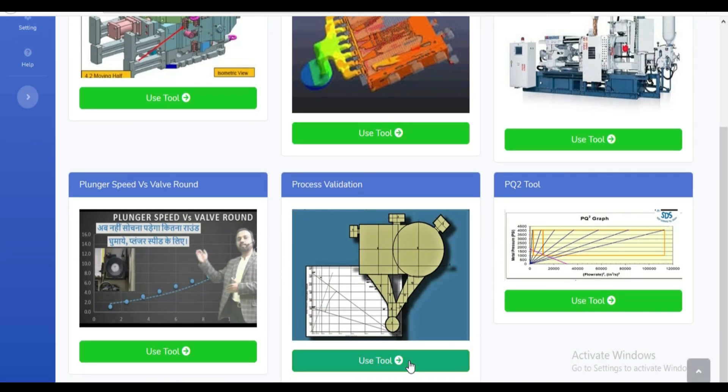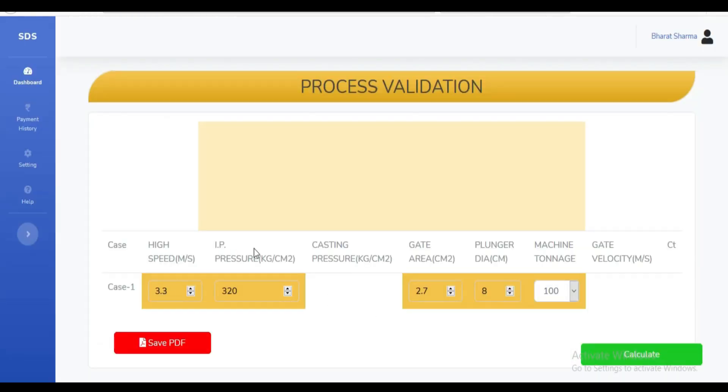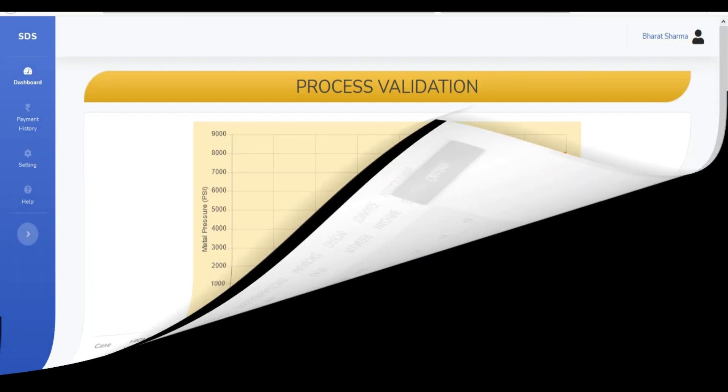Process validation tool is very useful to validate your process. This is a short or less time-consuming validation of your machine and die design parameters. In this tool, you can validate the process for up to a 3000-ton machine.